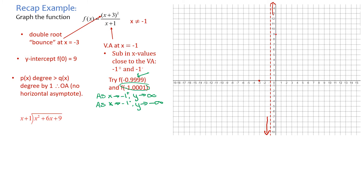We're going to have to do long division. So long division or synthetic division — I'm going to do long division. Go ahead and do that on your own — it's good practice keeping up that skill. Press pause, and when you come back you will see the full division done on the screen. All right, you've finished your division and we've got a remainder, but that's inconsequential. The equation of my oblique asymptote is y equals x plus 5.